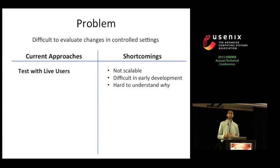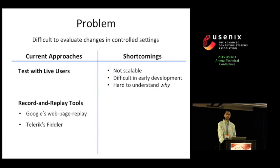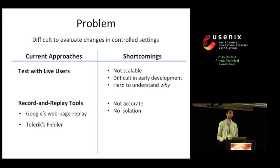Testing on live users also doesn't make it easy for a developer to understand why a specific change led to a change in performance. To overcome these issues, there exist several record and replay tools for HTTP, primarily Google's Webpage Replay and Telerik's Fiddler. These tools allow users to record HTTP traffic and replay it locally. However, during replay, both tools use a single proxy server even if multiple servers were contacted during recording. This is increasingly problematic given the rise of third-party libraries like jQuery and Google Analytics.